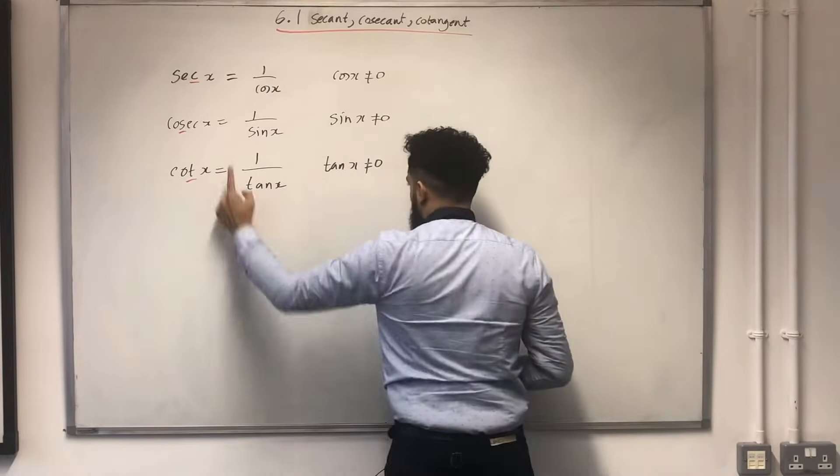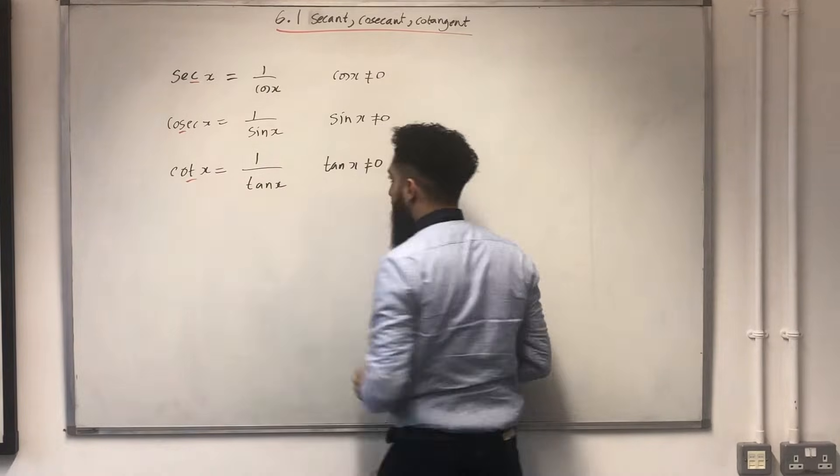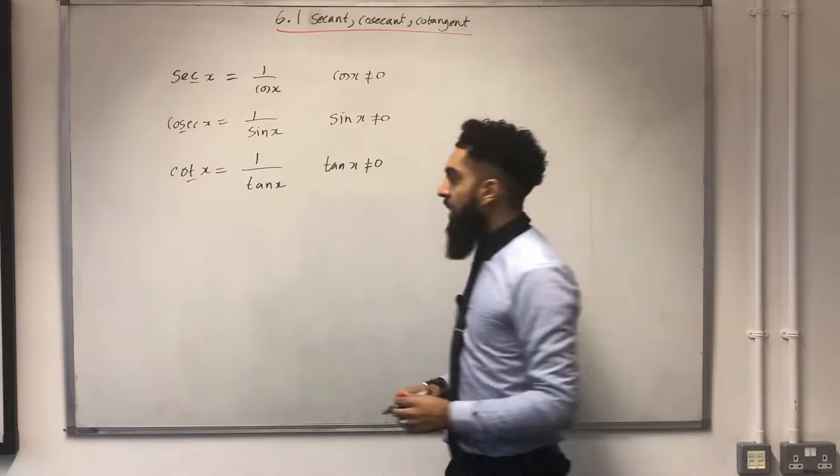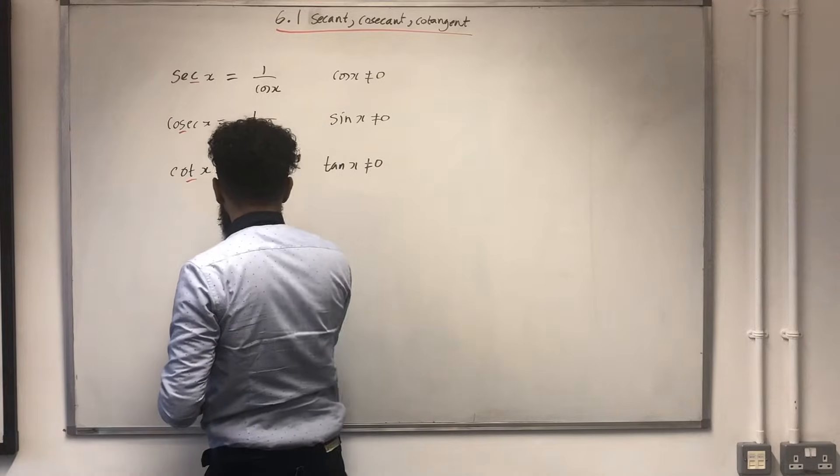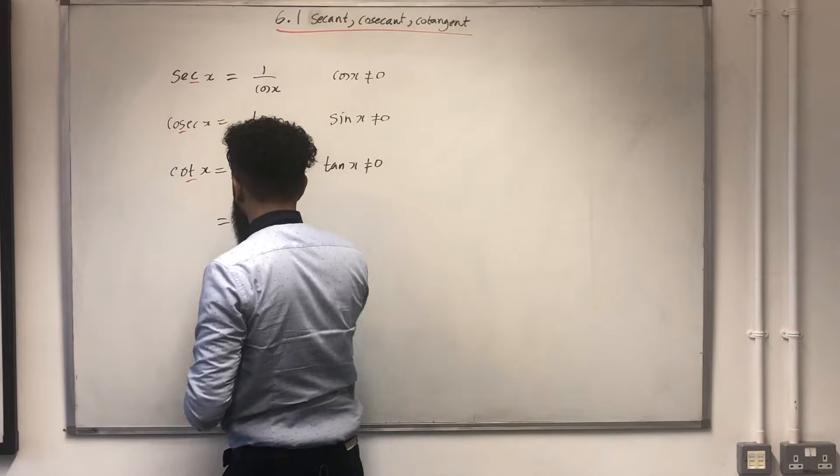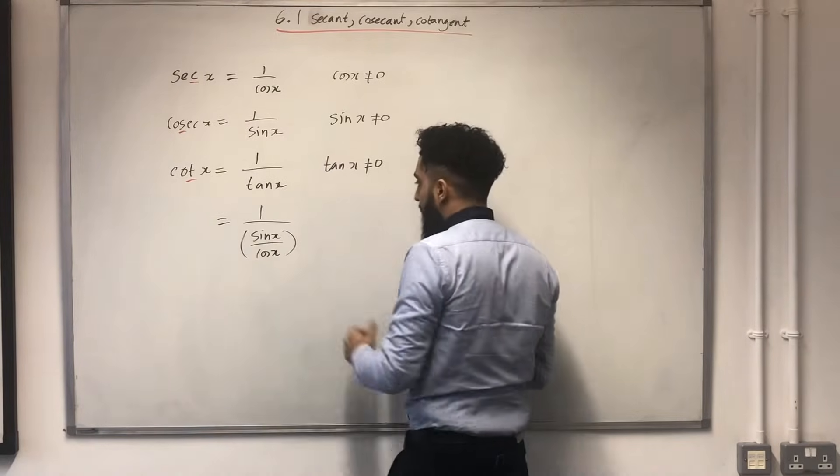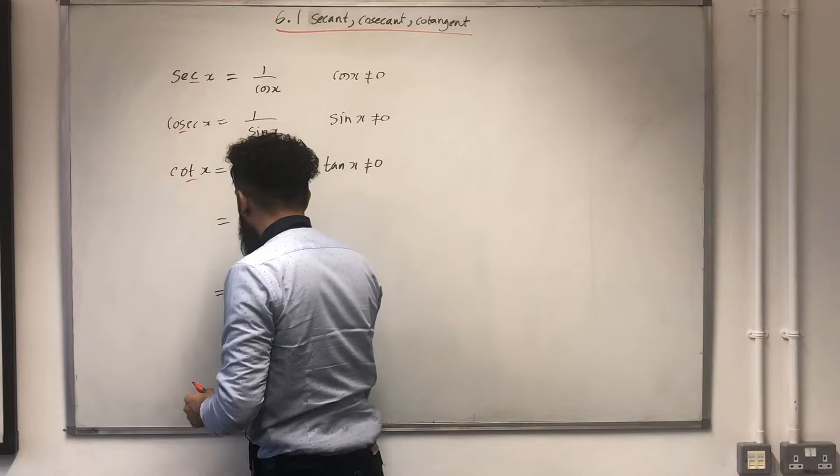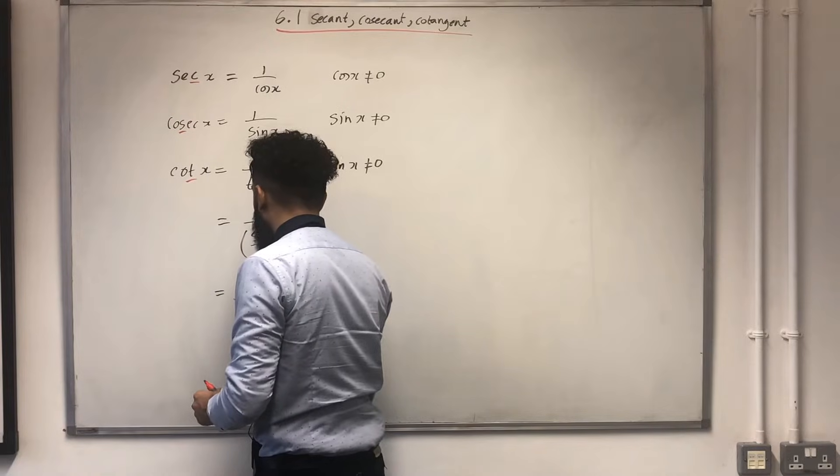Let's have a look at the third one very carefully. 1 over tan x. That there can be written as 1 over sin x over cos x. This here simplifies to give me cos x over sin x.